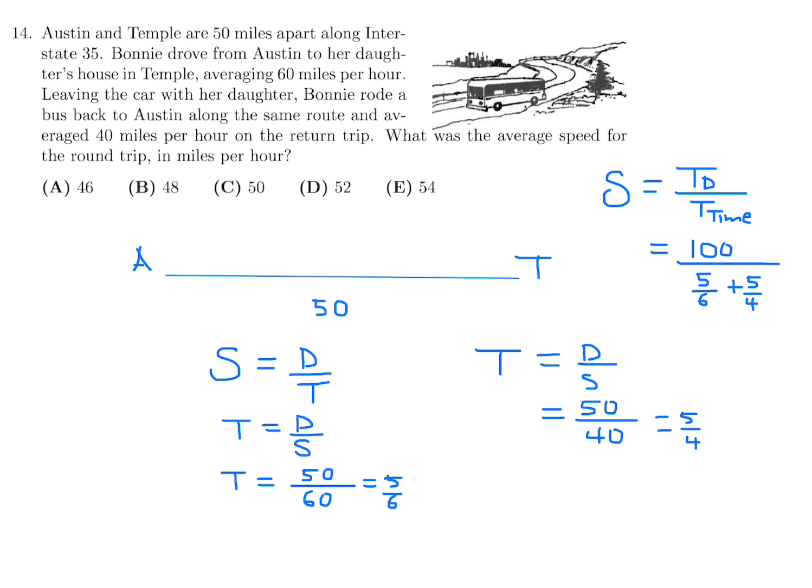Now to figure out the average speed for the entire trip, it would be the total distance over the total time. And therefore, the total distance there and back is 100, 50 times 2. The total time is 5 over 6 plus 5 over 4. So we do this math and we get 100 and then we have to add this fraction. So we got 20 plus 30, which is 50 over 24. And if you invert and multiply, you get 100 over 1, 24 over 50. And that looks like 2 times 24, which is 48. And that is the average speed for the round trip. So number 14, the answer is B.